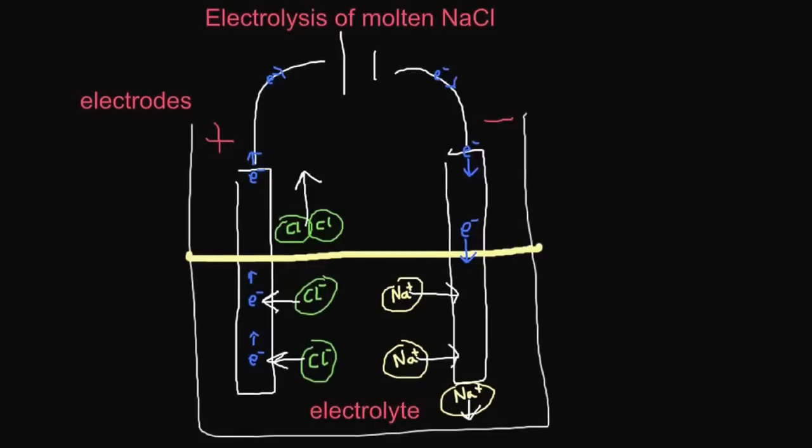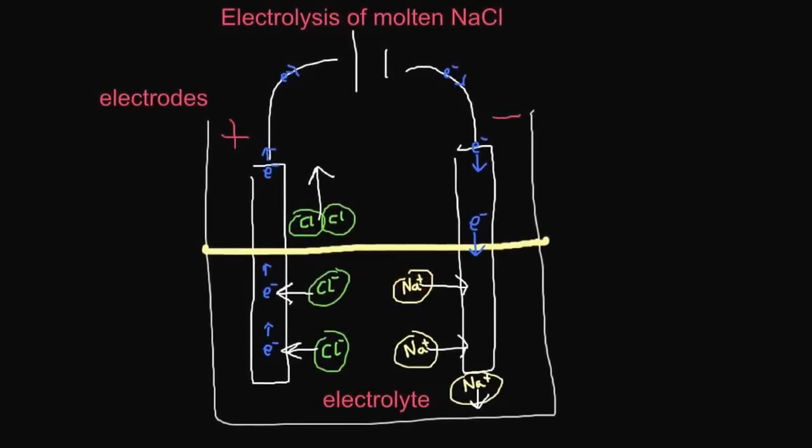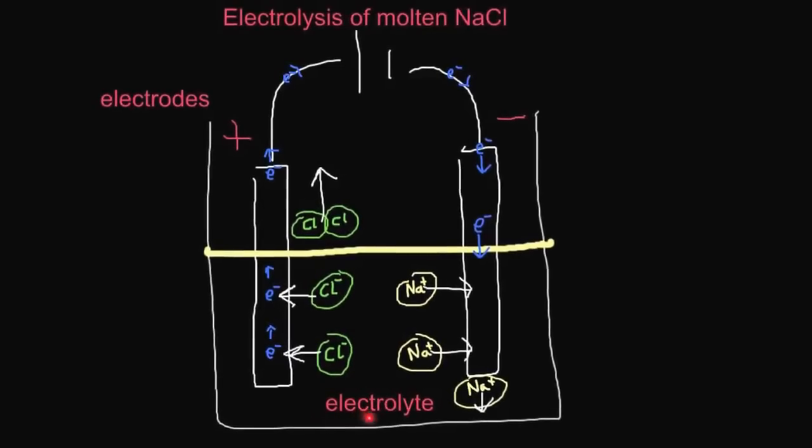This is just containing sodium ions and chlorine ions. It's heated up so that they turn into a liquid. Here you can see the sodium ions, here you can see the chloride ions. These two lines are the electrodes. They're hooked up by a wire to a battery or cell. The liquid is known as the electrolyte.